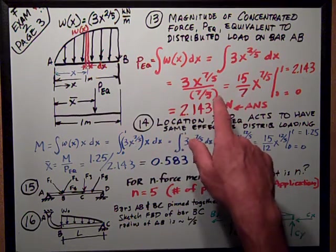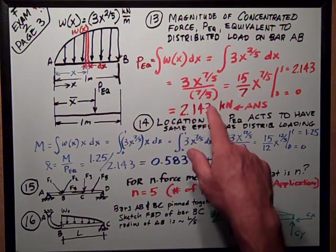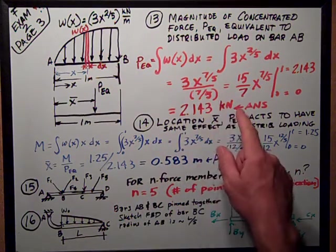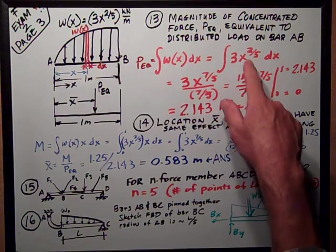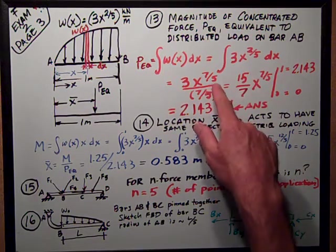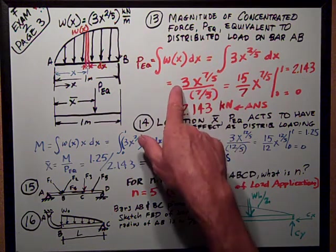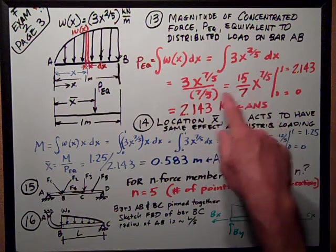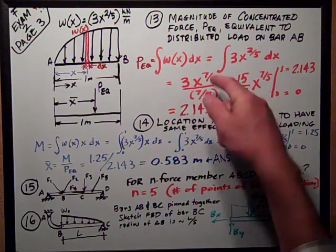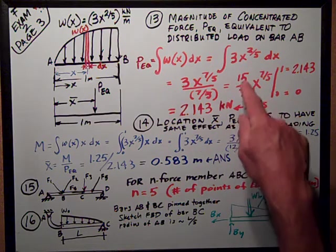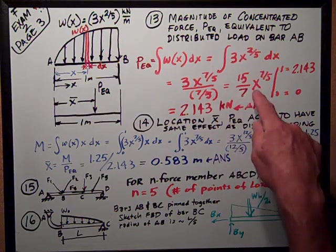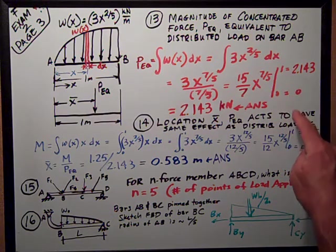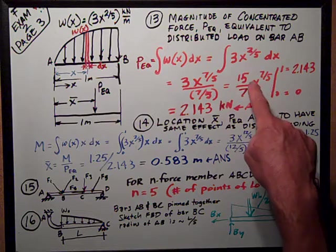Remember that the integral of x to the n is equal to x to the n plus 1 over n plus 1. So integral of x to the two-fifths is x to the seven-fifths over seven-fifths. Keeping our 3 constant out there, so I can rearrange the term on the bottom to be 15-sevenths x to the seven-fifths power, evaluated at 0 and 1. At 0, x equals 0, this whole thing goes to 0.